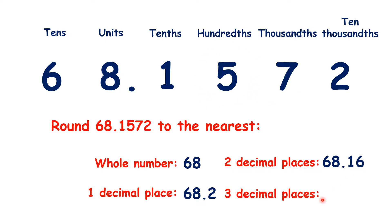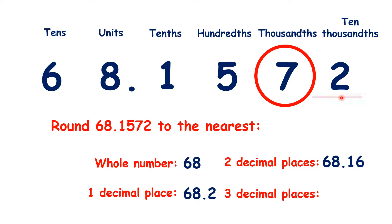For three decimal places, we're following the same steps, but this time we're looking at the third digit after the decimal point — we're looking at the thousandths. If we look to our ten-thousandths place, we can see that we're rounding down, so we have 68.157.